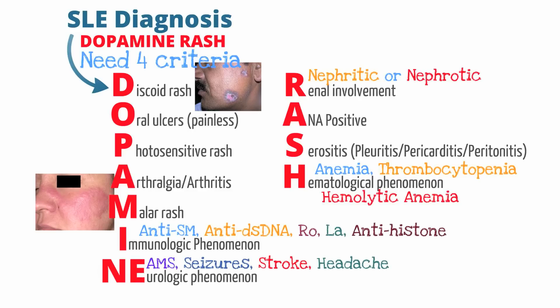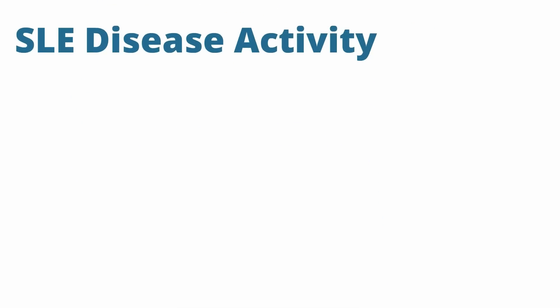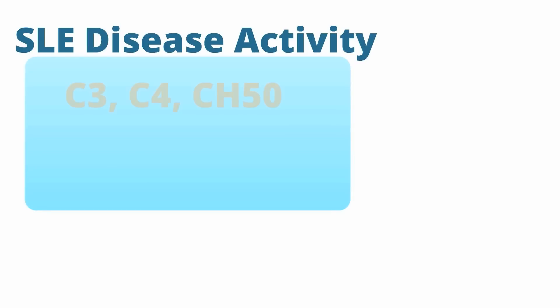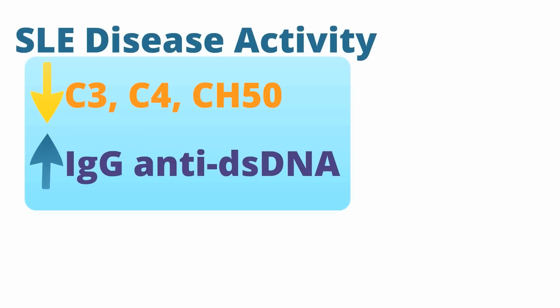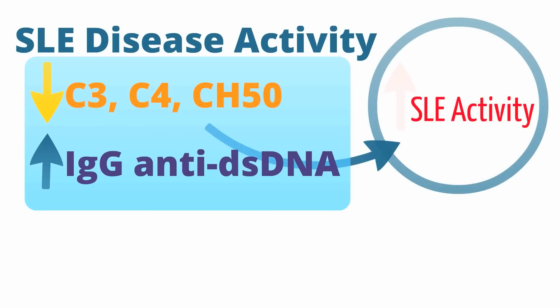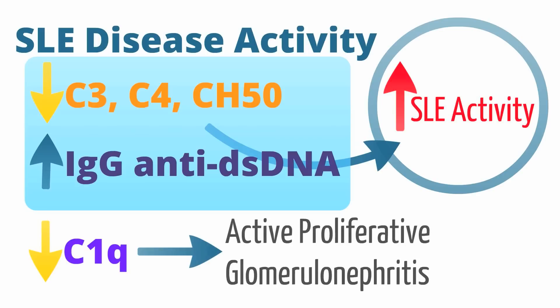Now that we have talked about the diagnostic criteria for lupus, let's talk about how to monitor disease activity. Lupus patients will need frequent routine labs including C3, C4, and CH50, which test the complement system. When lupus is highly active, it leads to consumption of complement factors. A rise in IgG anti-double-stranded DNA indicates an increase in disease activity. One indicator of proliferative glomerulonephritis is a drop in your C1Q complement.